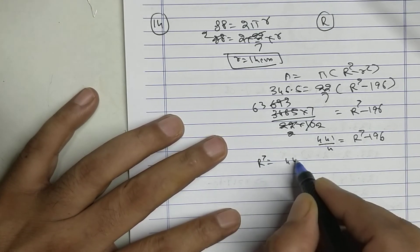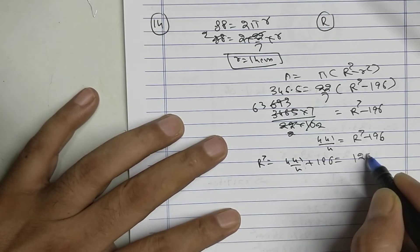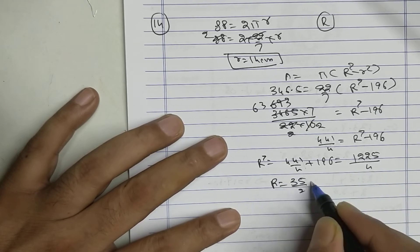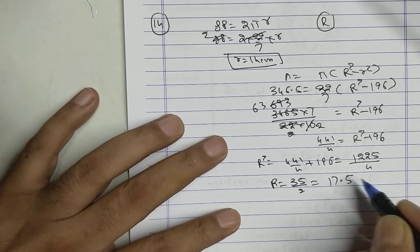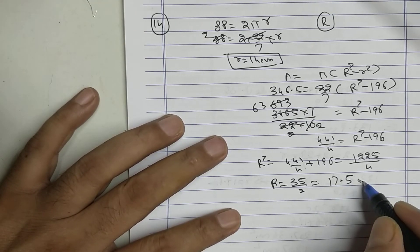So R² is 441 upon 4 plus 196, 1225 upon 4. So R equals 35 upon 2, that is 17.5 centimeters.